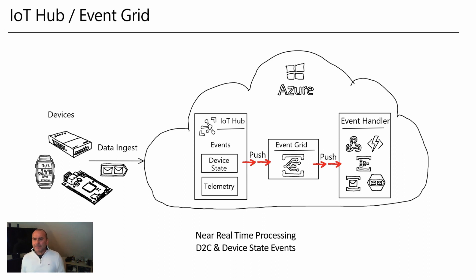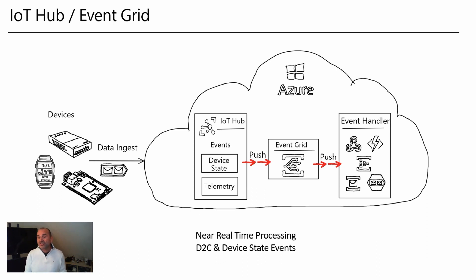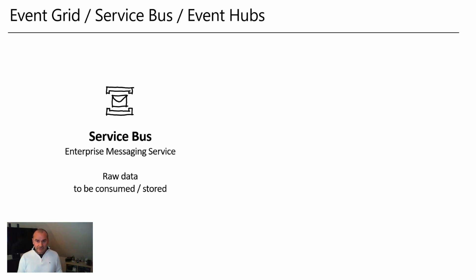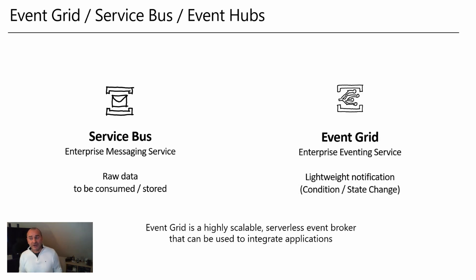It also allows you to connect the world of IoT — all the devices, the signals, the telemetry — with business functionality, so that you can react on signals or telemetry data from your devices. Before we go deep there, let's talk a little about differences between an enterprise messaging service like Service Bus and eventing solutions. With Service Bus, raw data can be stored inside the messaging service to be consumed by receivers.